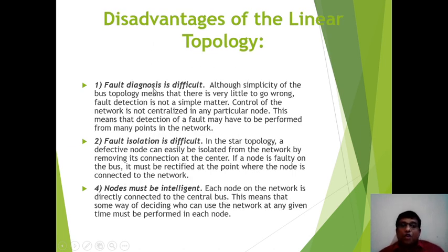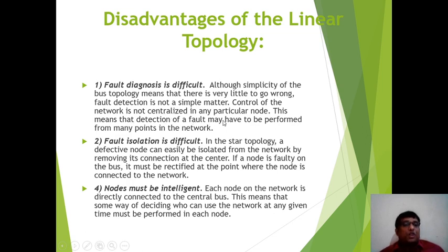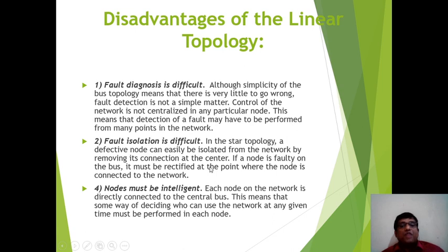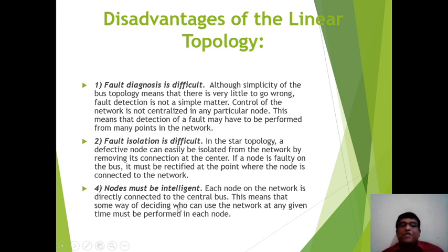Disadvantages of Bus Topology: fault diagnosis is difficult because control of the network is not centralized — each device connects to the long cable via tap and cable line. Fault isolation is difficult — in star topology a defective node can easily be isolated at the center, but if a node is faulty on the bus, it must be rectified at the point where it is connected. Nodes must be intelligent, as each node is directly connected to the central bus and must decide who can use the network at any given time.